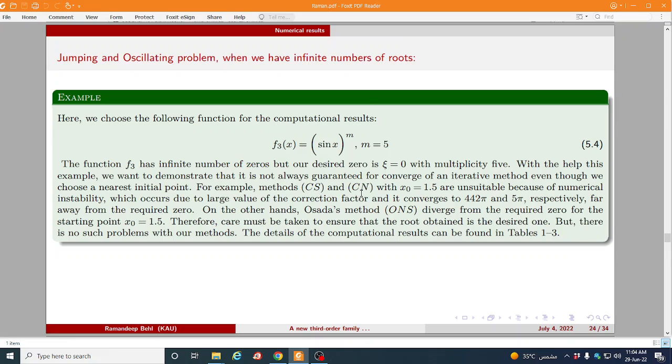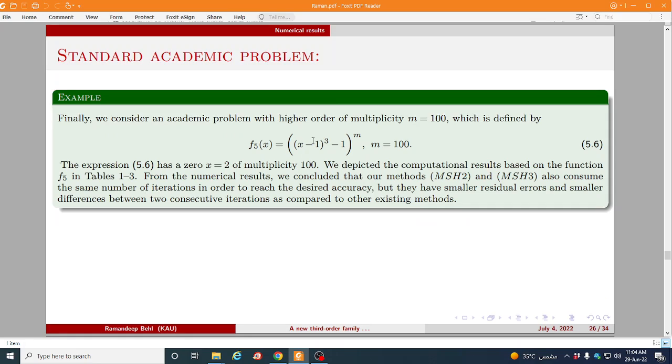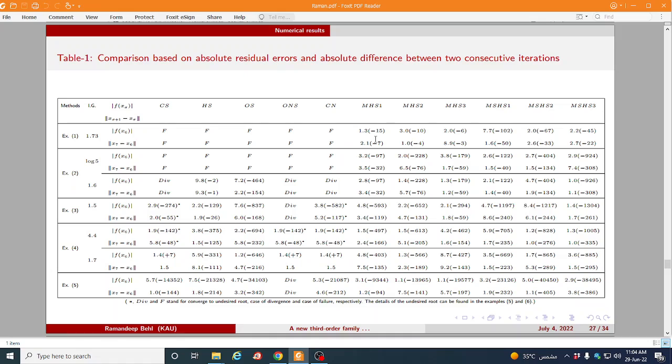Similarly we define here jumping and oscillation problem. So here this problem m is equal to 5 sin(x) oscillation problems. So here we choose another problem where our required root is 3.146 with multiplicity 3, but other methods like CS, ONS star they are converging to the undesired root, another root. Similarly we choose another standard problem for a higher order of multiplicity like 100.